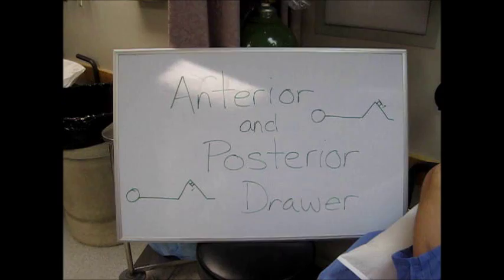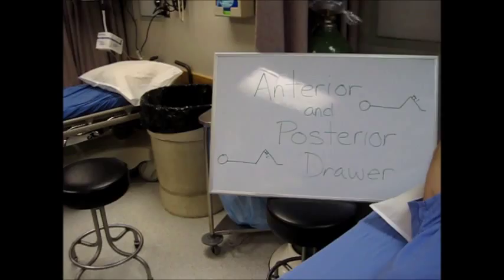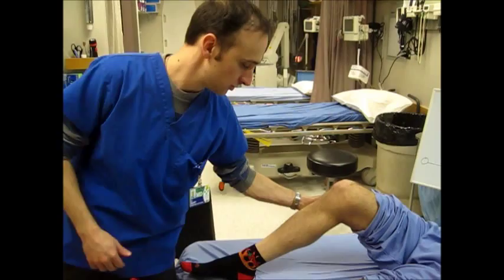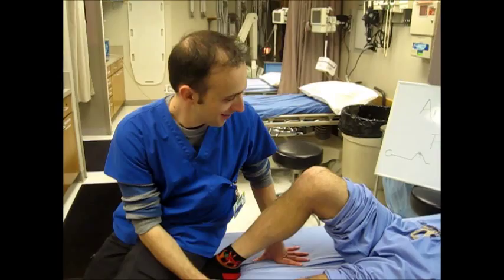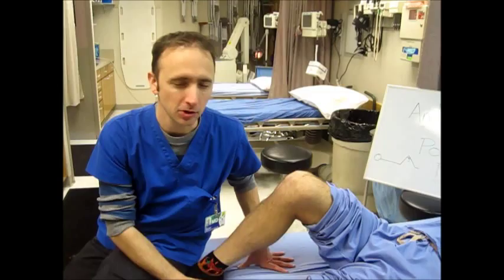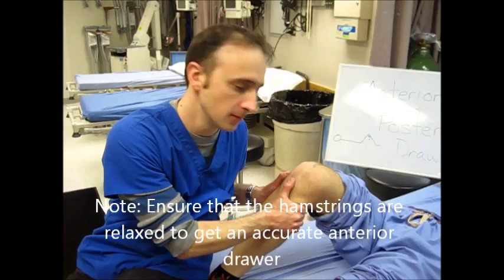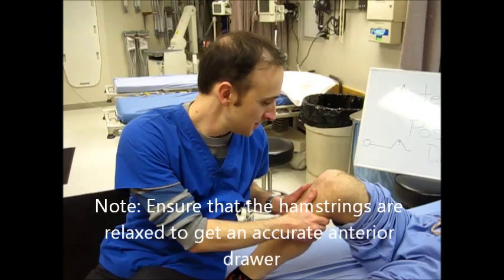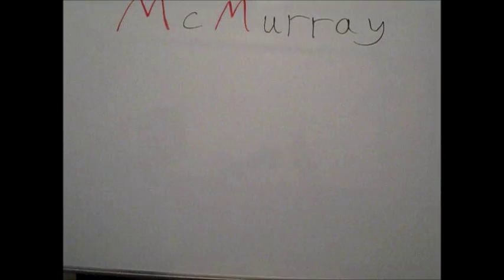Today we're going to do the anterior and posterior drawer testing. So remember, 90 degrees. Anterior drawer, ACL, drawer opens anteriorly. Pulling out, checking for excursion. And this drawer is shut. Posterior drawer, PCL, opens posteriorly. This drawer too is shut.